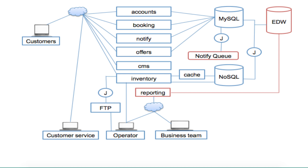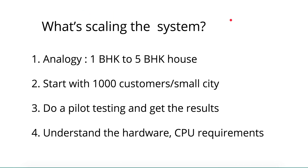Looking at the system we saw in detail in the previous video, we have multiple folks interacting with the system — customers, customer service, operators, and the business team. We also have back-end systems like FTP and reporting systems interacting with the same services. These services run on pods in Docker and need to be scaled to meet traffic. We also have a MySQL database that can receive a huge volume of data and also needs to be scaled.